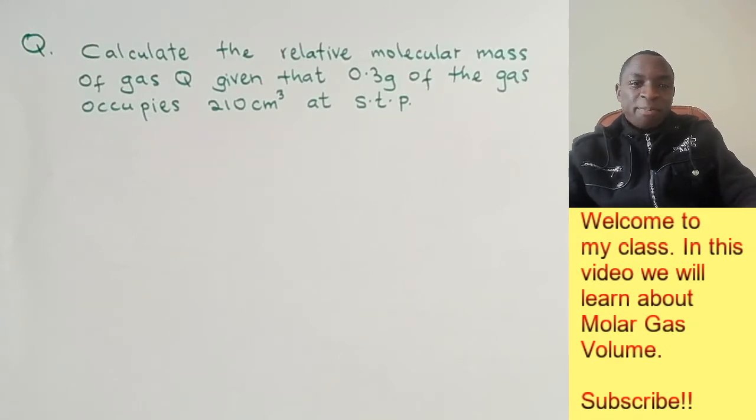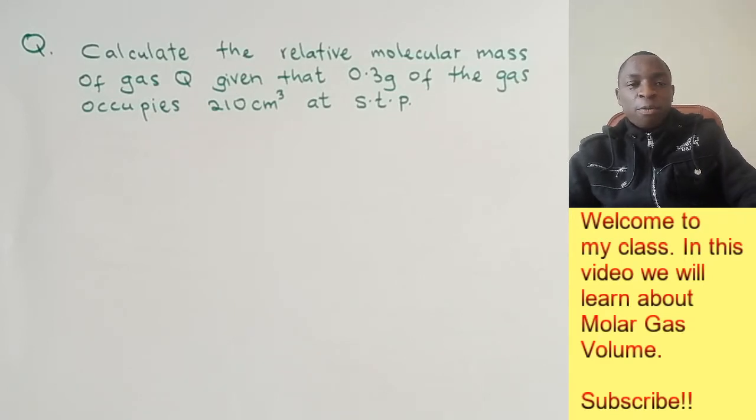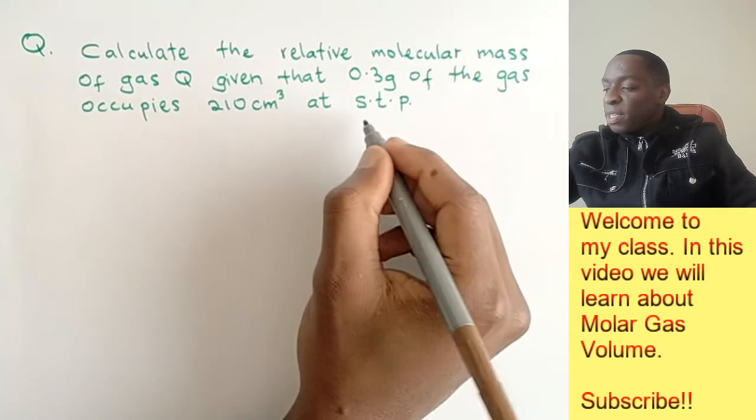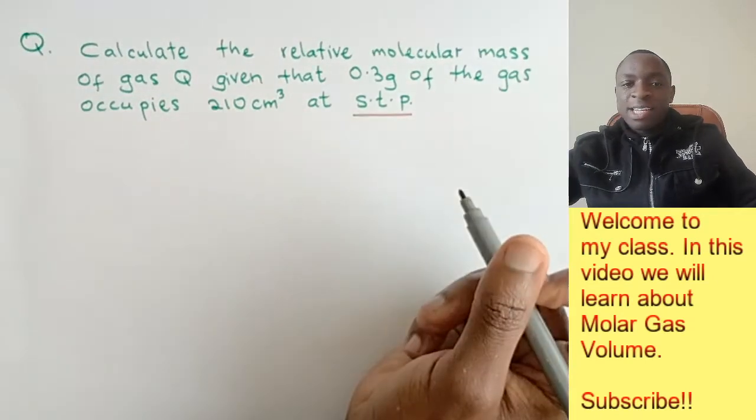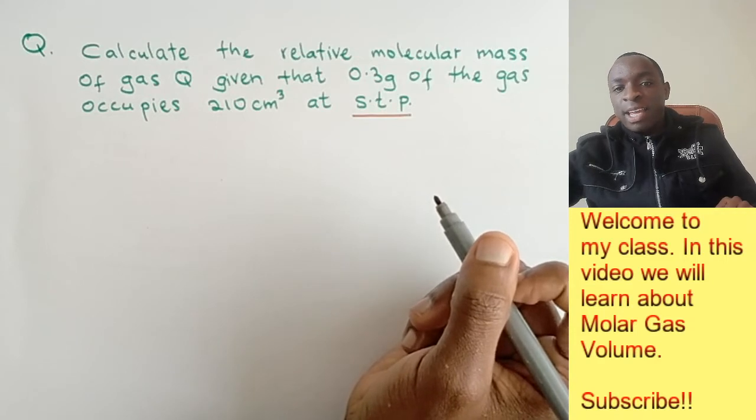In this second example, calculate the relative molecular mass of gas Q, given that 0.3 grams of the gas occupies 210 cm³ at STP (standard temperature and pressure).